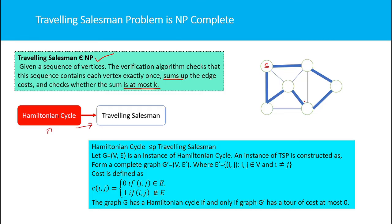We can convert the Hamiltonian Cycle problem to the Traveling Salesman Problem. Let G = (V, E) be an instance of Hamiltonian Cycle. An instance of TSP is constructed by adding edges and defining costs: set the cost of all edges in the Hamiltonian cycle to zero, and all other edges not in the Hamiltonian cycle get cost one. Then G has a Hamiltonian cycle if and only if G' has a tour of cost at most zero.